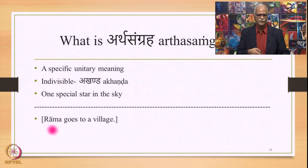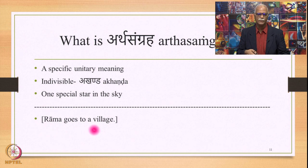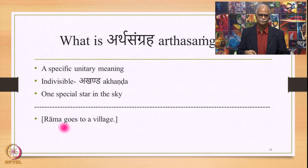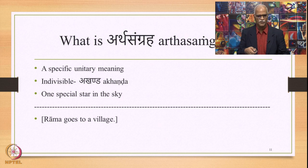For example, 'Rama goes to a village' — this meaning is placed within square brackets indicating it is one unit. This one indivisible unit is what is primarily Sangraha or Arthasangraha.